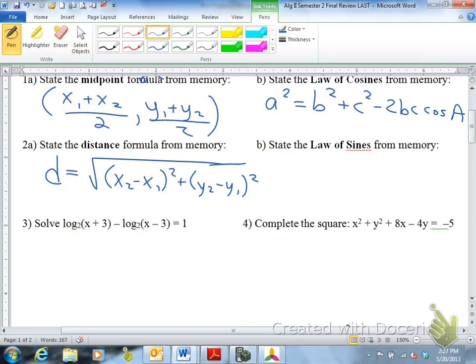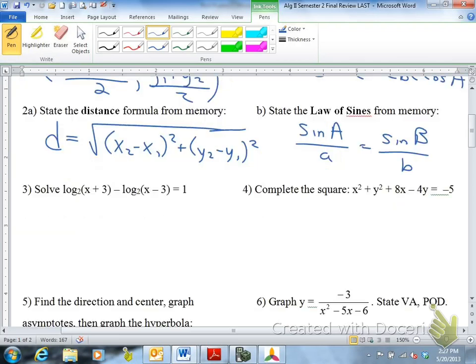Law of sines is sine a over a equals sine b over b. You can also do it a over sine a, b over sine b. Do either one. There are some formulas.